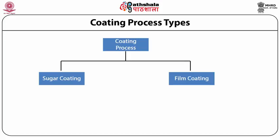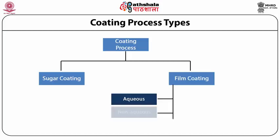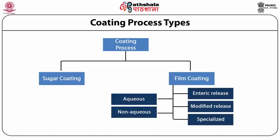Film coating is a single-stage process involving coating of a thin polymer layer onto the tablet core, usually by spray method. The thickness of film coating is between 20 and 100 micrometers. Film coating process can be divided into aqueous or non-aqueous coating depending upon the solvent used. Further, film coating can also be divided based on the properties of polymer used. The batch coating time for film coating is usually 1 to 2 hours and increases tablet weight by only 2 to 3%.